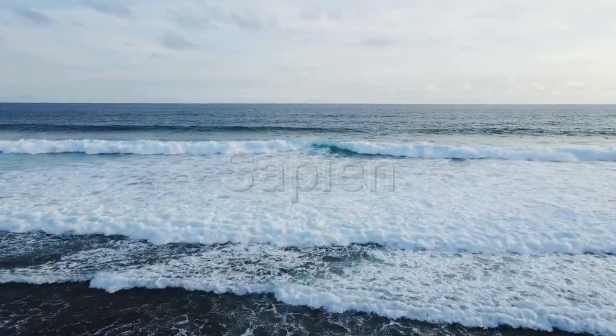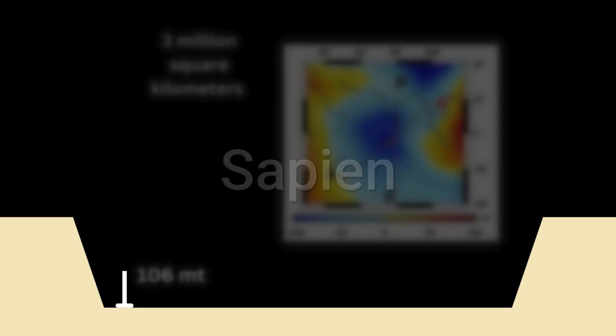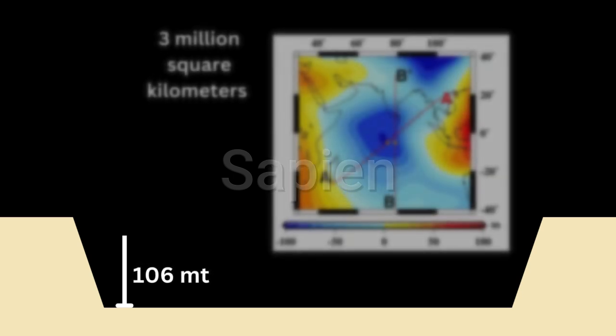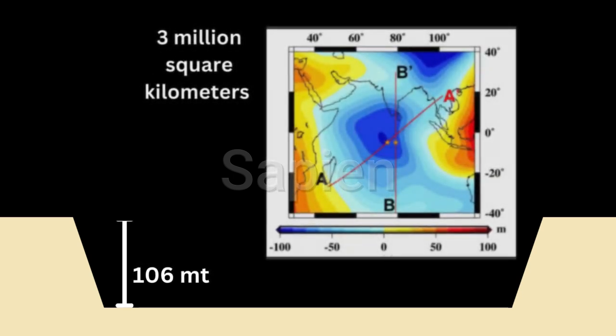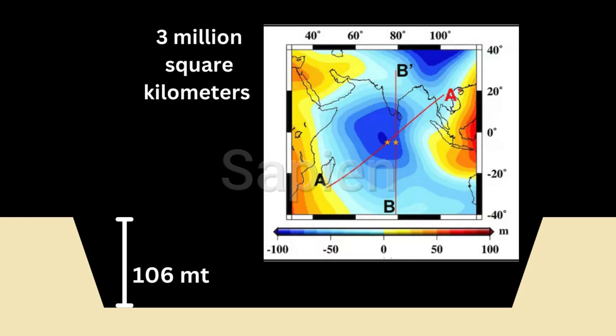Picture this: if you could drain the Indian Ocean, you'd find a depression 106 meters deep, covering an area of 3 million square kilometers, almost the size of India itself.